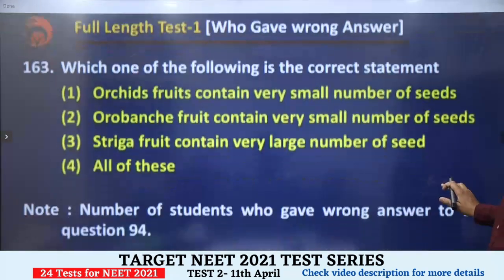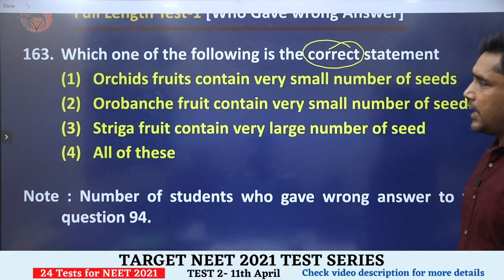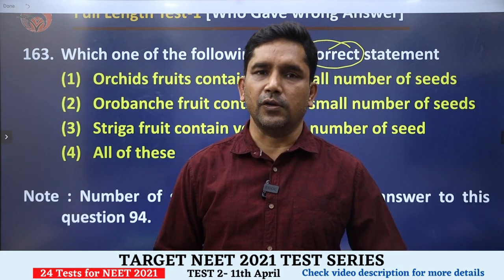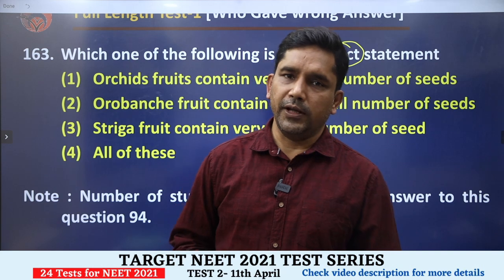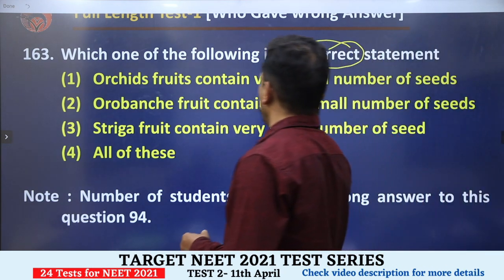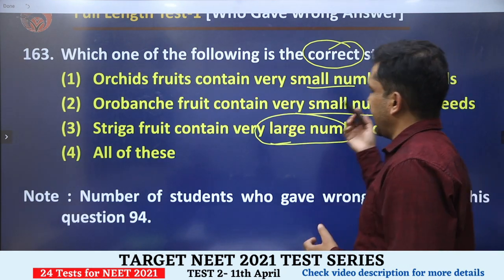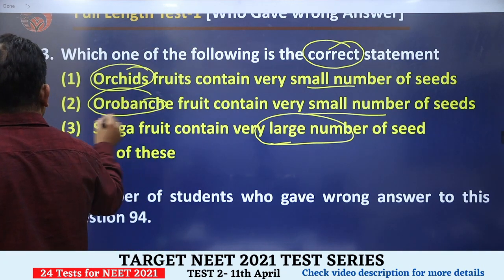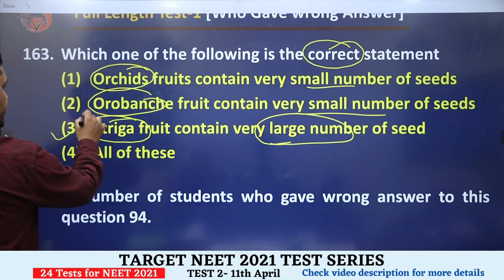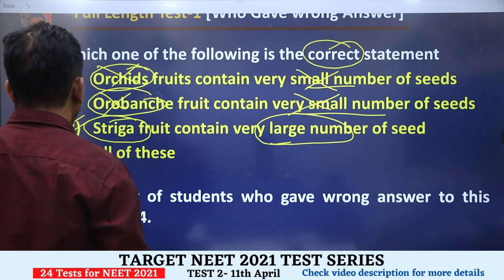Question 163, attempted wrong by 94 students. Which one of the following is the correct statement? When correct/incorrect statements are asked, always highlight the key word first to avoid marking errors. Here, one option says orchids fruits contain very small number of seeds, and another says Bankia and Striga fruits contain very large numbers. However, orchids, Bankia, and Striga are all examples of plants with a LARGE number of seeds. So only the Striga option with large number is correct; the options stating small numbers for orchids and Bankia are wrong.